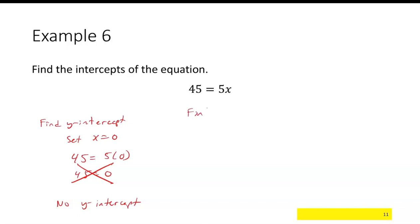To find the x-intercept, set y equal to 0. There isn't any y in the equation, so that doesn't change anything. We have 45 equals 5x. Divide by 5, and we get x equals 9. So (9, 0) is the x-intercept.